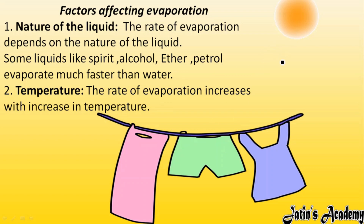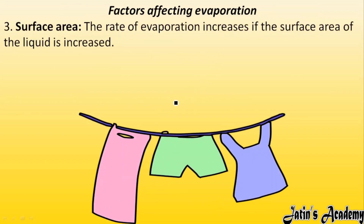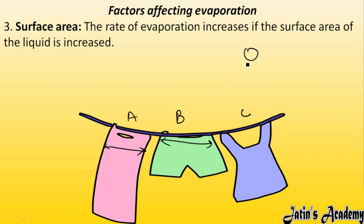The next factor is temperature. When more temperature or heat is there in the atmosphere, the evaporation rate also increases. The third factor is surface area. The rate of evaporation also increases with the increase in surface area. For example, if one cloth has more surface area, it has more tendency to gain heat at the surface. So whenever more surface area is there, liquid changes to gaseous form more easily.